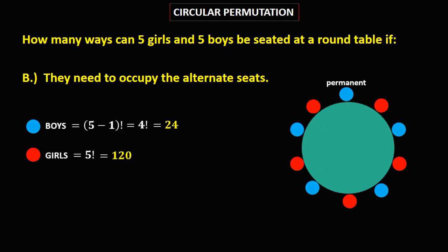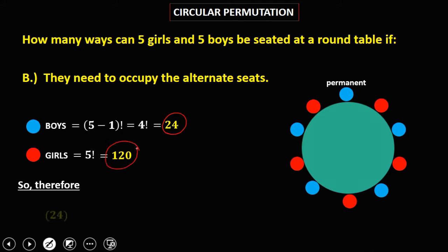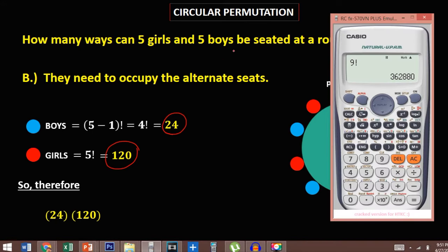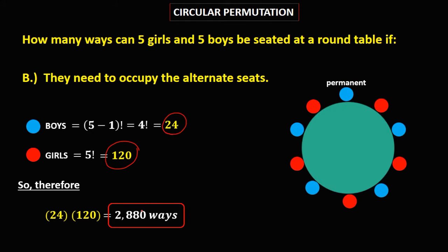If we assign the permanent seat to the girls instead, then girls use (5 minus 1) factorial and boys use 5 factorial. To solve, multiply the two numbers: 24 times 120 equals 2,880. Therefore, there are 2,880 ways.